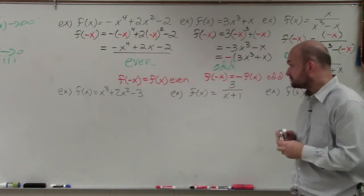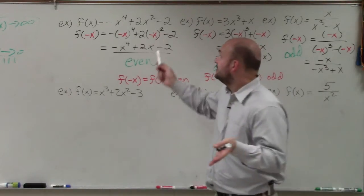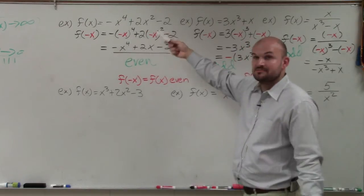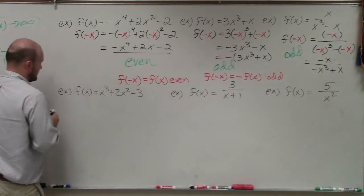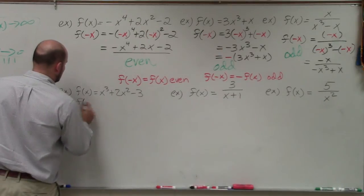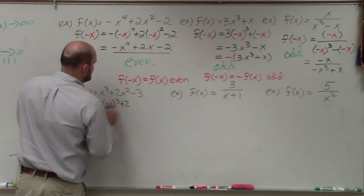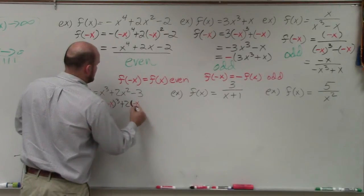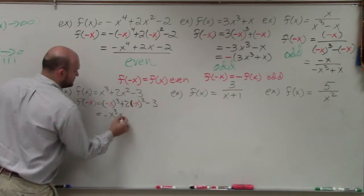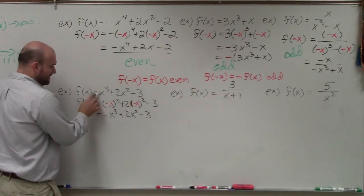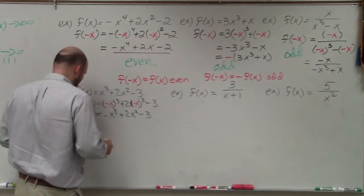Now we're going to work on this next function. A lot of students will say, well, only if you have all odd powers or all even powers is it odd or even. Even powers make an even equation; odd powers make an odd equation. But what about when you have them mixed? If I plug in f of negative x, I get negative x cubed plus 2 times negative x squared minus 3. This turns into negative x cubed, positive x squared, then minus 3. These terms are opposite, and those are the same — so it is neither even nor odd. We call that neither.